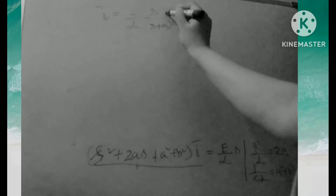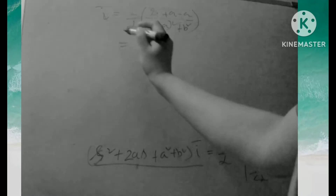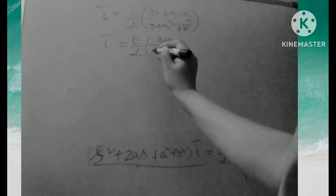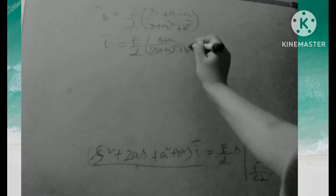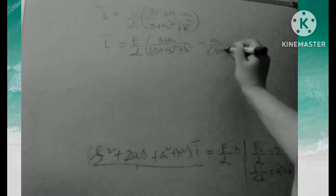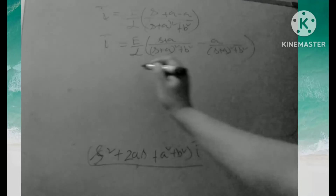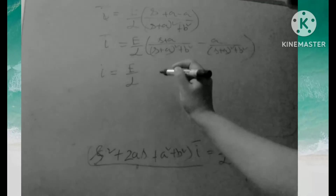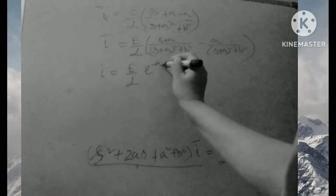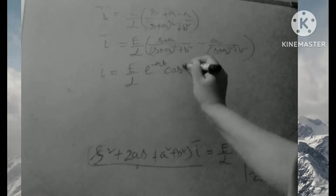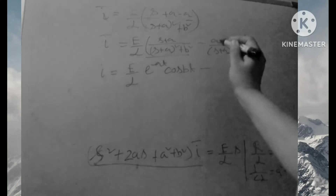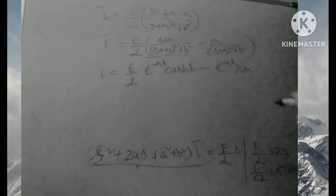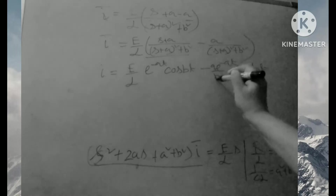Taking inverse Laplace on both sides, and using partial fractions, the expression becomes: [(S² + A² + B² − A) / ((S+A)² + B²)]. Applying inverse Laplace, we get: I = (E/L)·[e^(−At)·cos(Bt) − (A/B)·e^(−At)·sin(Bt)].